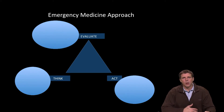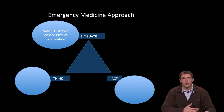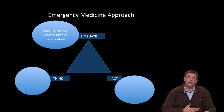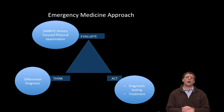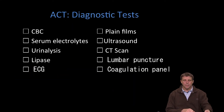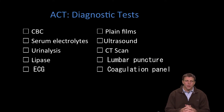In emergency medicine, our approach begins with an initial evaluation including a SAMPLE history and focused physical examination. The approach is more triangular — sometimes after a focused assessment it's important to think about the patient and develop a differential diagnosis, and sometimes it's important to act immediately, such as performing diagnostic testing like the finger stick blood sugar or other definitive treatments.